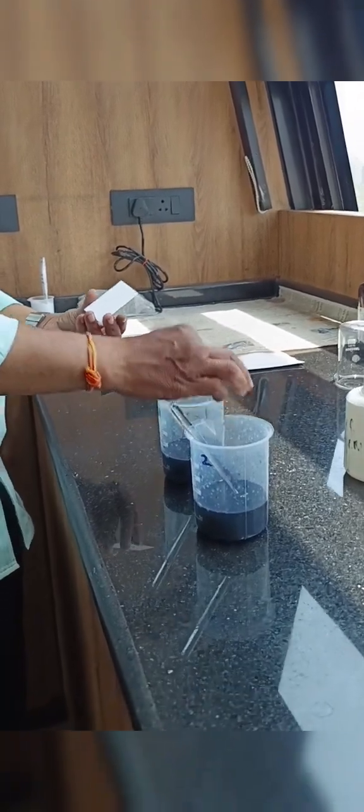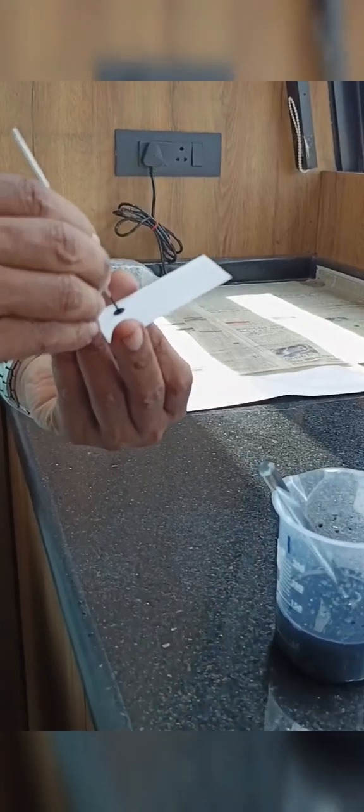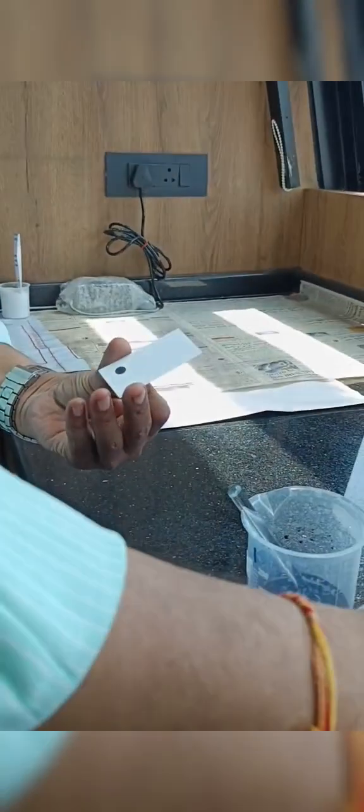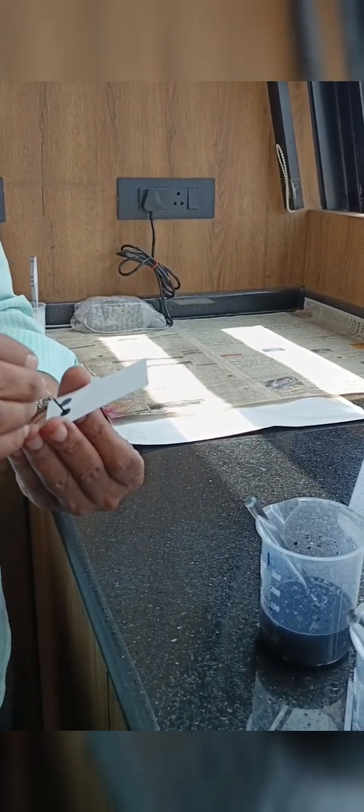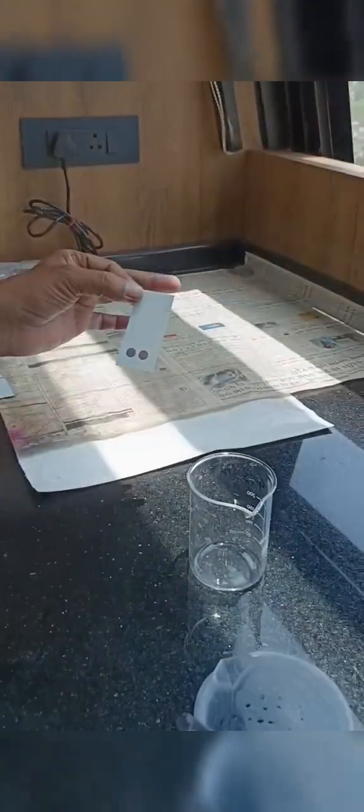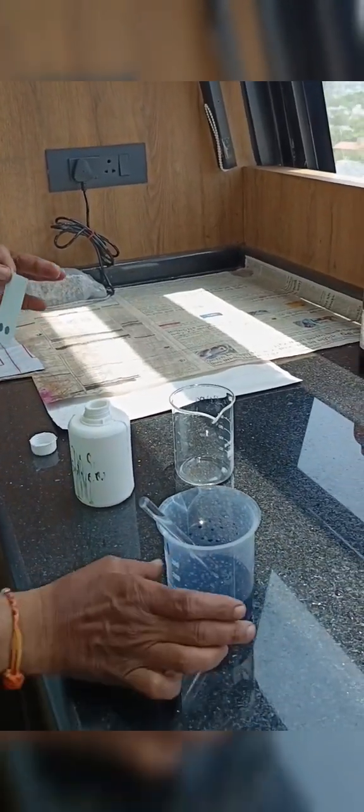We will dry it in the oven for three to four minutes at 110 degrees Celsius to evaporate moisture content. After it is dried out, we will take another beaker and pour a little amount of solute.